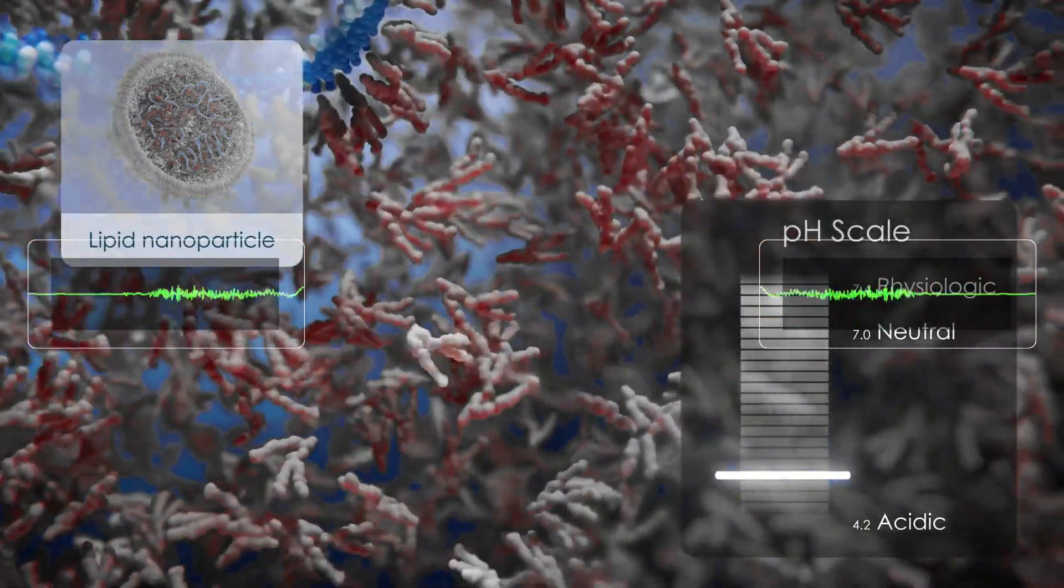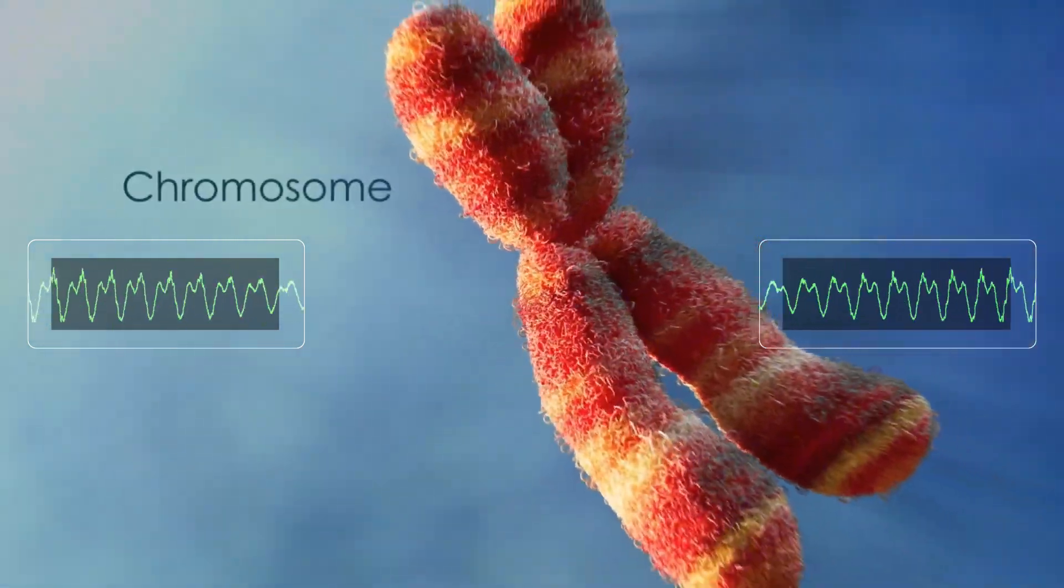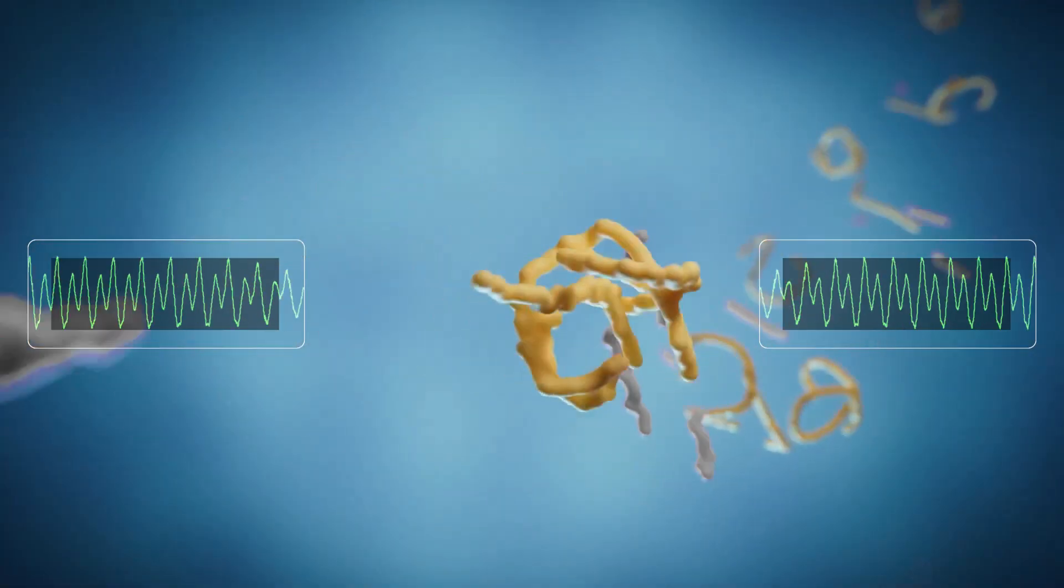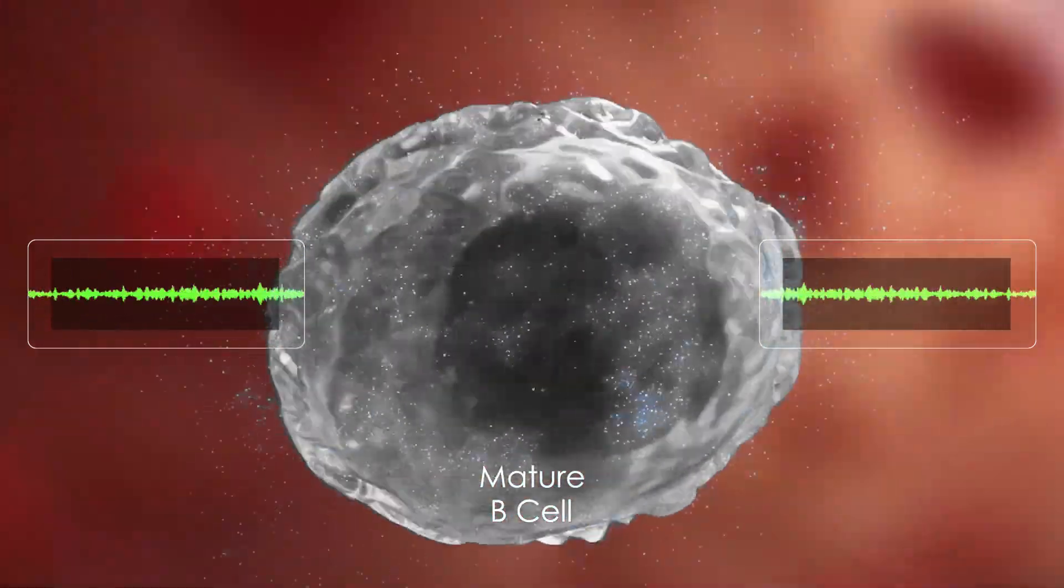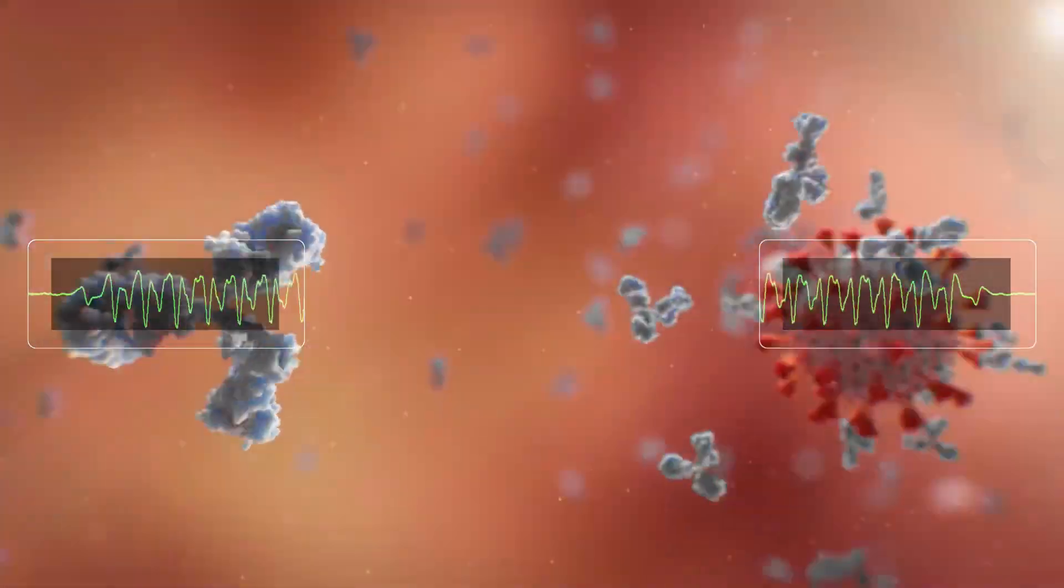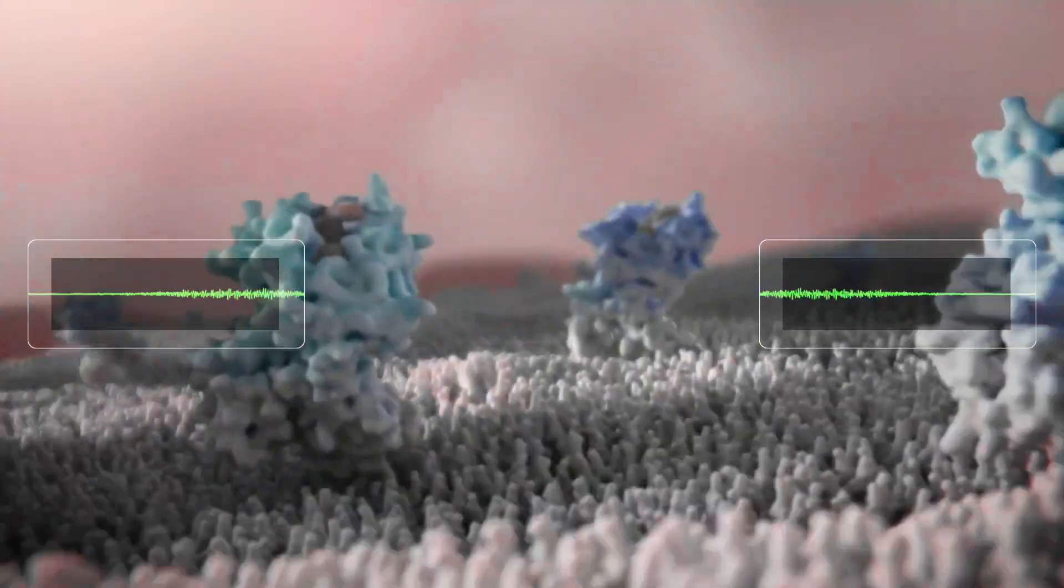U.S. Health Secretary Robert F. Kennedy Jr. cited doubts about mRNA's ability to protect against upper respiratory infections, while shifting that funding towards safer, broader vaccine platforms that remain effective even as viruses mutate, he said in an HHS statement.